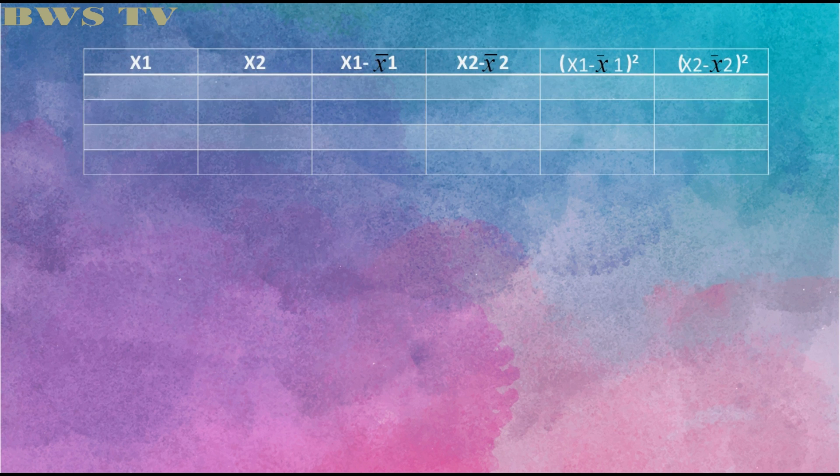Now we have here a table to fill and to be able to find t. We have here x1 and x2 as our first and second group. In the next two columns, this is where you subtract the mean of the group to the given of the group in each row, and in the last two columns, this is where you square the difference of the previous two columns.